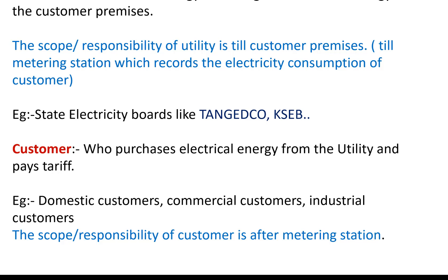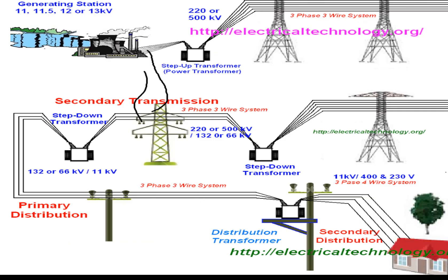There are also industrial customers who take energy for their industrial applications. The scope and responsibility of the customer begins after the metering panel — the complete distribution of electrical supply within the premises is under the customer's responsibility. The customer will be responsible for any hazards that happen within his scope, that is, after the metering station.